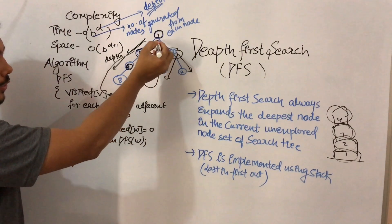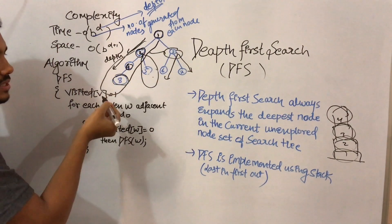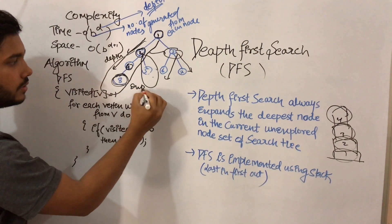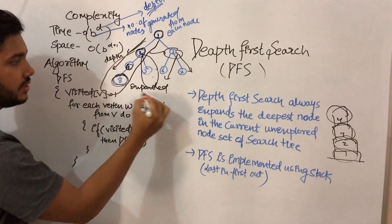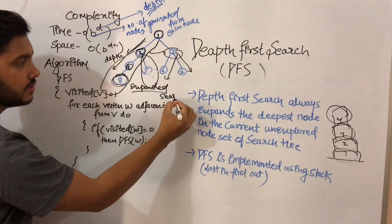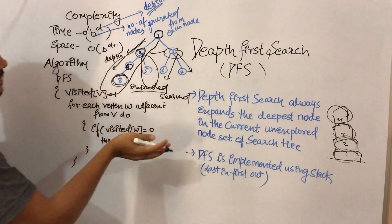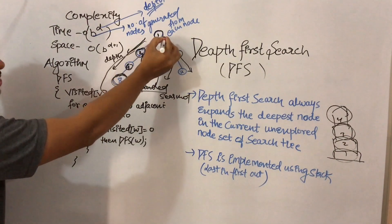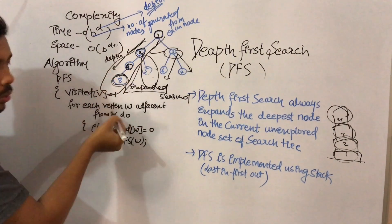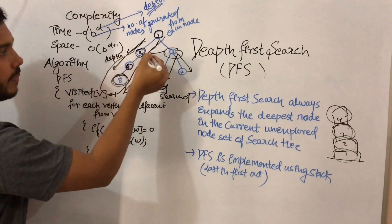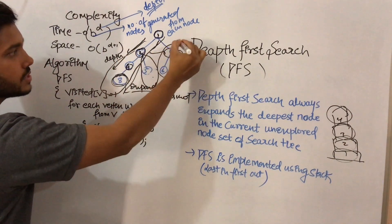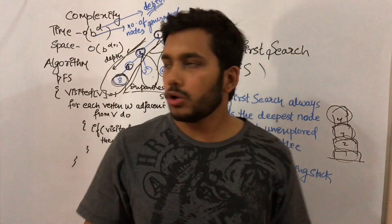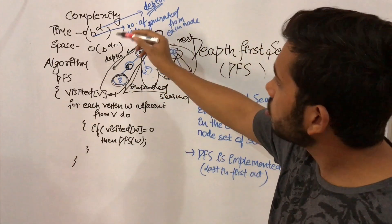When implementing DFS, the last node added will be expanded and searched first. So the order would be: first, second, fourth, eighth — you go in the downward direction to search the nodes, then come back and search the rest of the nodes.